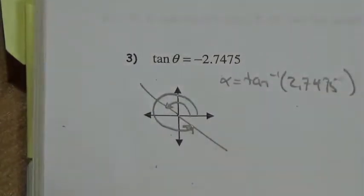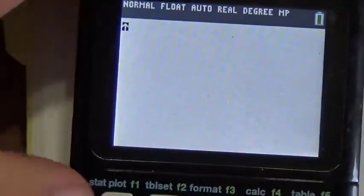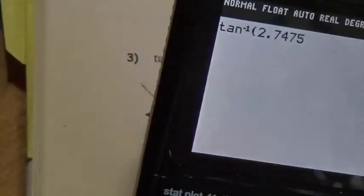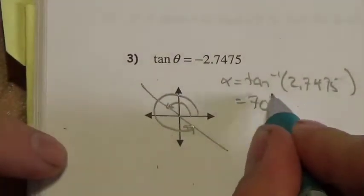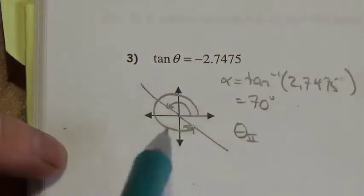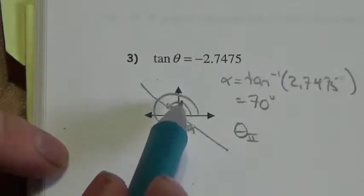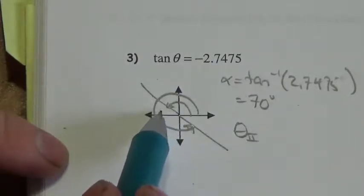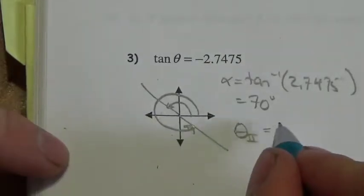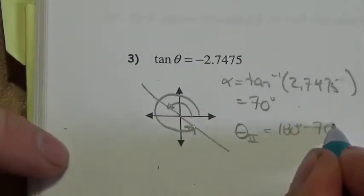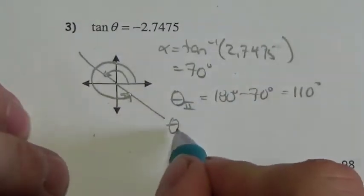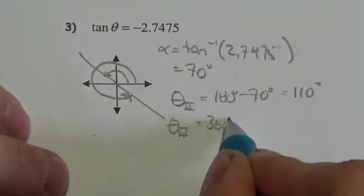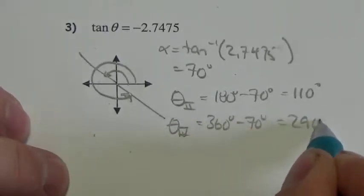The inverse tangent of 2.7475 gives a nice angle of 70 degrees. So the angle inside the triangle is 70 degrees. In quadrant 2, that's going to be 180 degrees minus 70 degrees — because 180 degrees is past it and I go back 70 — so that's 110 degrees. Then in quadrant 4, that's 360 minus 70 degrees, so that'll be 290 degrees.